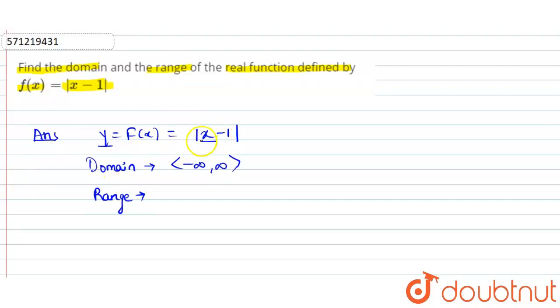Now, the value of y will always be positive. Why? Because we have y equals mod of x minus 1. And we know that the work of modulus is to make any value inside it positive. So, that is why the value of y will always remain positive. So, positive means from 0 to infinity. So, our range will be from 0 to infinity.